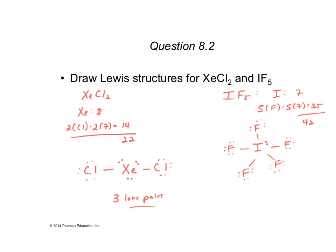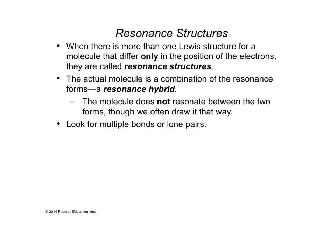If you cannot correctly draw Lewis structures, you won't be able to correctly identify molecular geometry. You need to be able to do this on your own — you can't Google it on an exam. Now, for some Lewis structures, one structure alone isn't adequate to describe bonding. In these cases we invoke the concept of resonance or resonance structures. Let's explain resonance using ozone as an example.